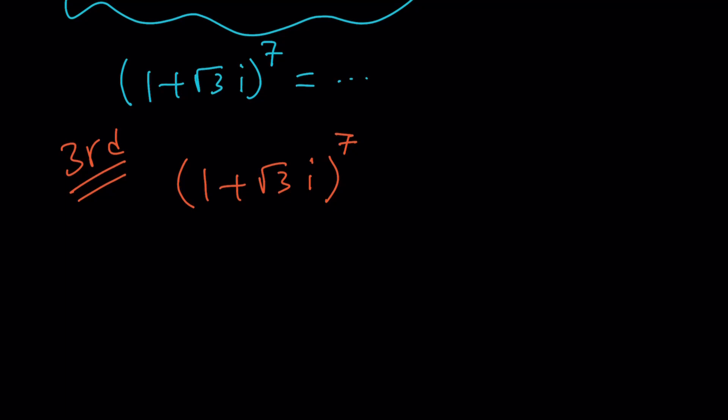So to be able to raise something to a higher power, like if it's second, third, no big deal. Just square it or cube it. But with powers that are larger, especially something larger than five or six, I don't know. It makes sense to use the polar form, Euler's formula. So what do I mean by that?